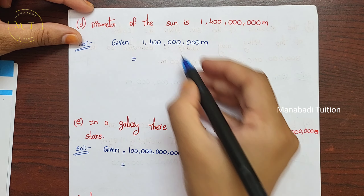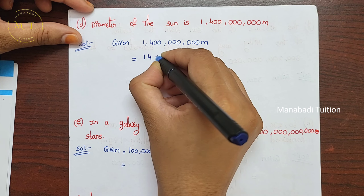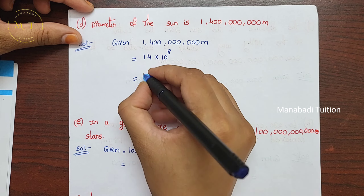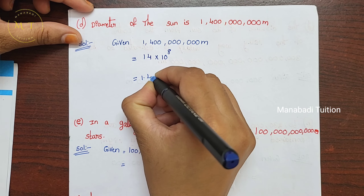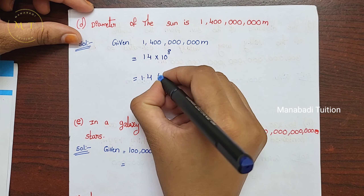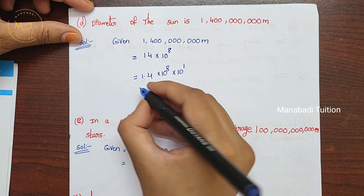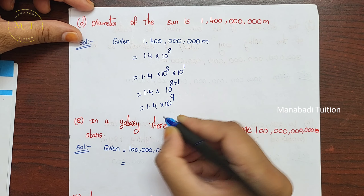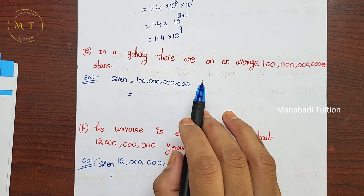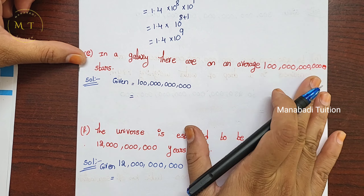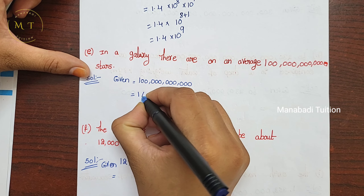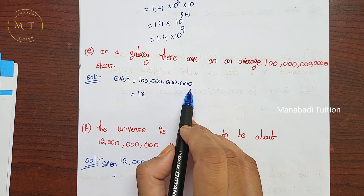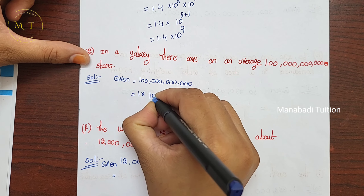Next, part D — diameter of the Sun. Write the given number: 1.4 into 10 power. Count the zeros: 1, 2, 3, 4, 5, 6, 7, 8 — there are 8 zeros, so 10 power 8. After placing the point, 1 digit moved before the point, so multiply by 10 power 1. Add exponents: 8 plus 1 equals 9. So the answer is 1.4 into 10 power 9.